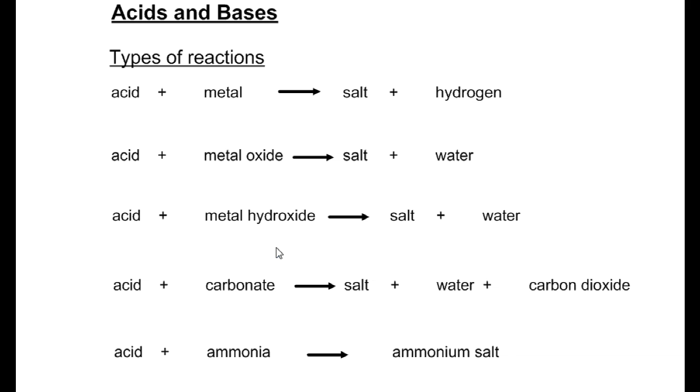When an acid reacts with ammonia, an ammonium salt is produced. These general rules are very important to remember when looking at reactions of acids and bases.